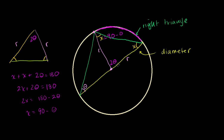Now let's look at this other triangle. This side over here also has a distance that is a radius of the circle, and this distance over here is also a radius of the circle. So once again, this is also an isosceles triangle — these two sides are equal, so these two base angles have to be equal. If this is theta, this is also going to be equal to theta. We actually use that information to show the result about inscribed angles and central angles subtending the same arc.